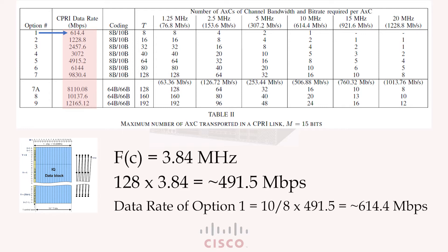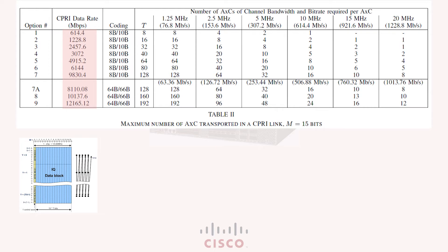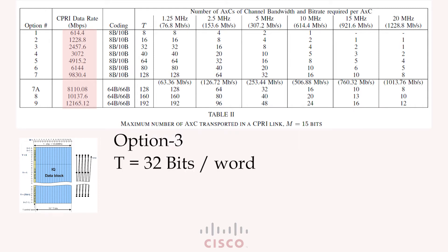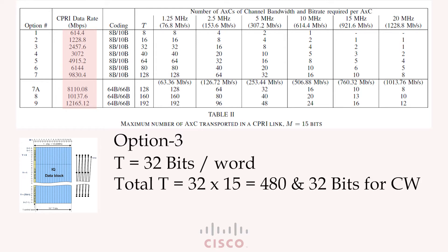Now that we understand where the CPRI option rate is coming from, let us test our knowledge on another CPRI option. Let's pick CPRI option 3. Here t is equals to 32 bits per word.